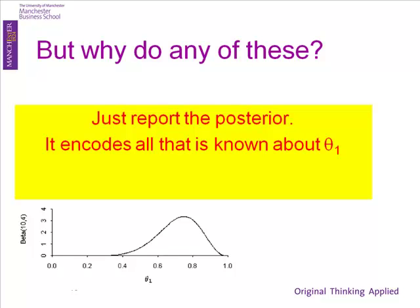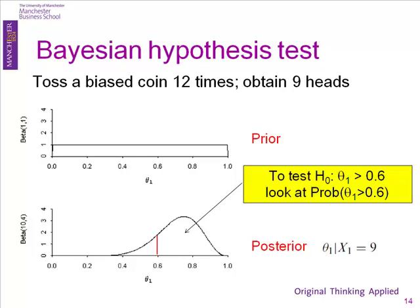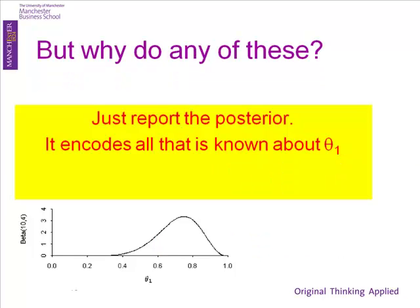If you're talking with decision makers — which is where I play — showing them the distribution is a lot more interesting than showing them a p-value of 0.7. So Bayesians stopped doing hypothesis tests, stopped doing estimation and confidence intervals quite as much. We just started reporting posteriors, which led to the interesting comment that was out there during the 80s: 'Bayesians talk through their posteriors.'